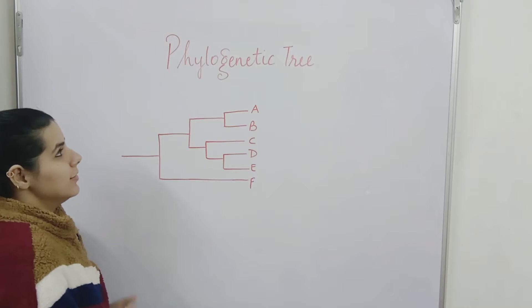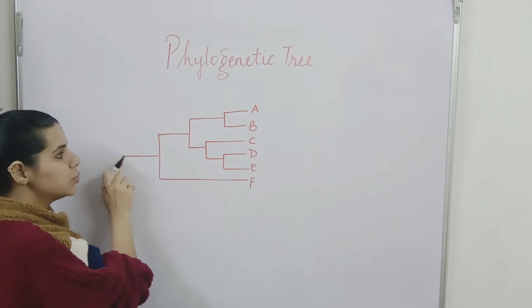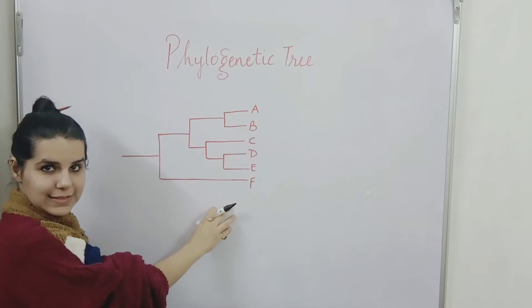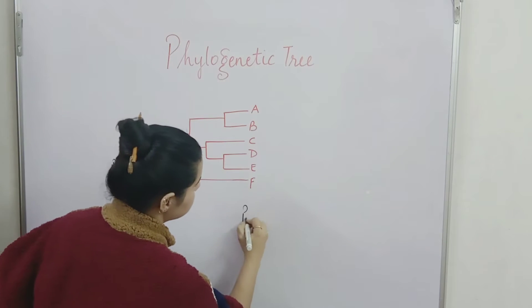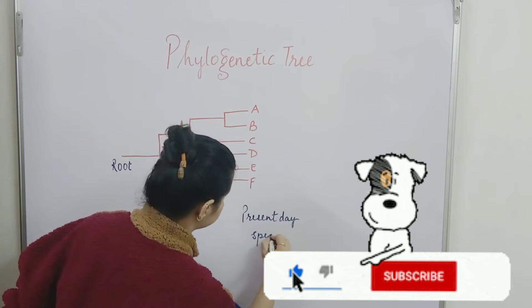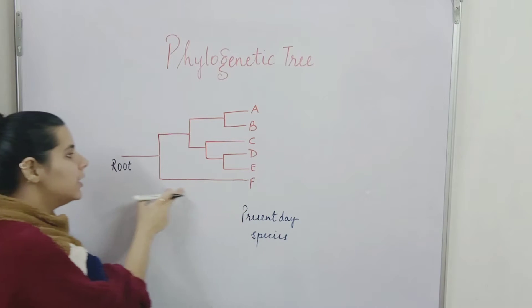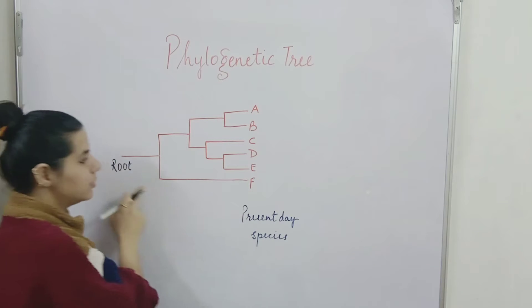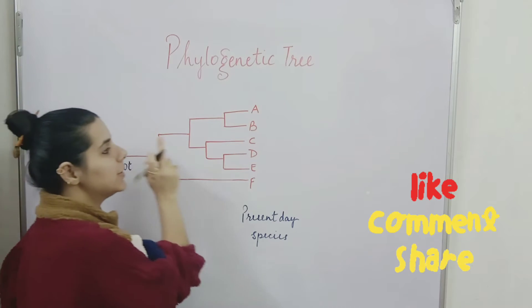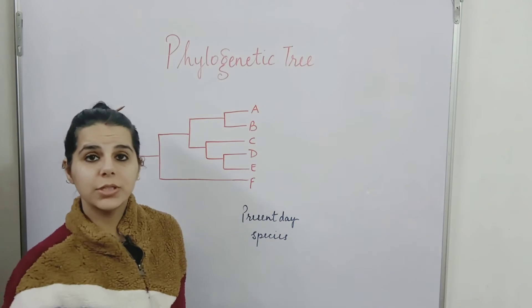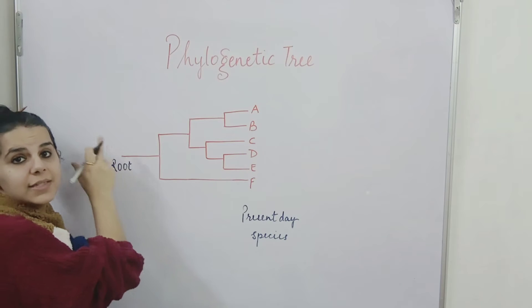Let's take an example of a phylogenetic tree. We start with the root, which is the common ancestor for all of the species shown. These are the present-day species. If I want to study the evolutionary pathway of species F to the ancestor, I can trace from here back to the root. Similarly for species C, I can trace back through the tree to the common ancestor from where it originated.